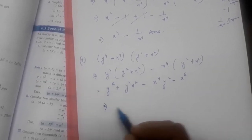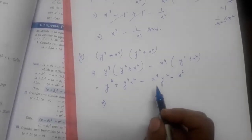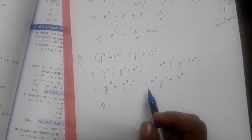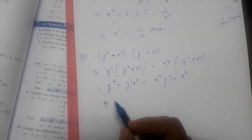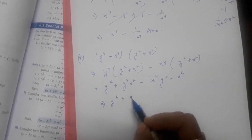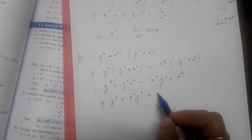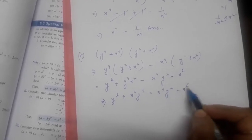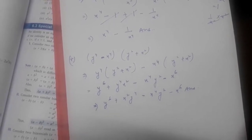Nothing is to be added or subtracted, so we can write the answer as: y⁶ + x²y⁴ − x⁴y² − x⁶. This is our answer for the fifth part. Hope this is clear.